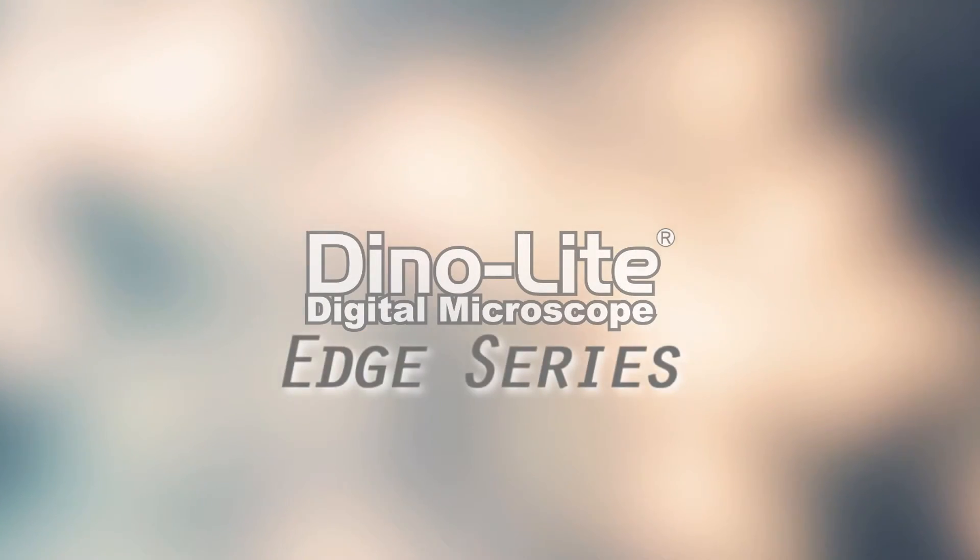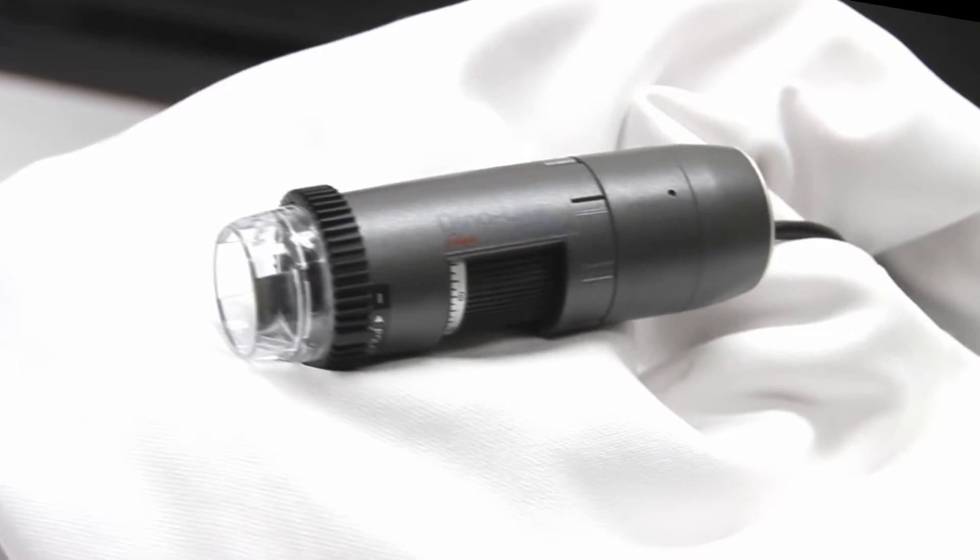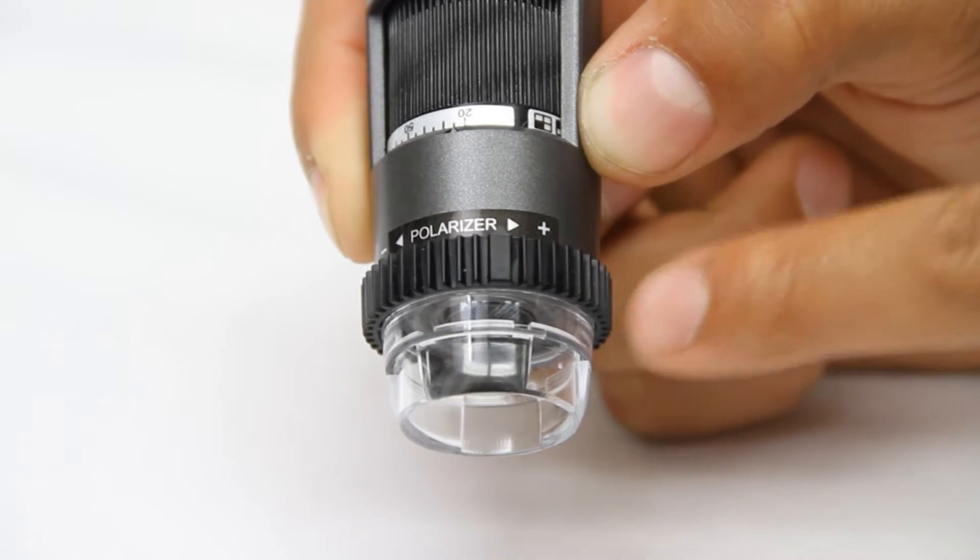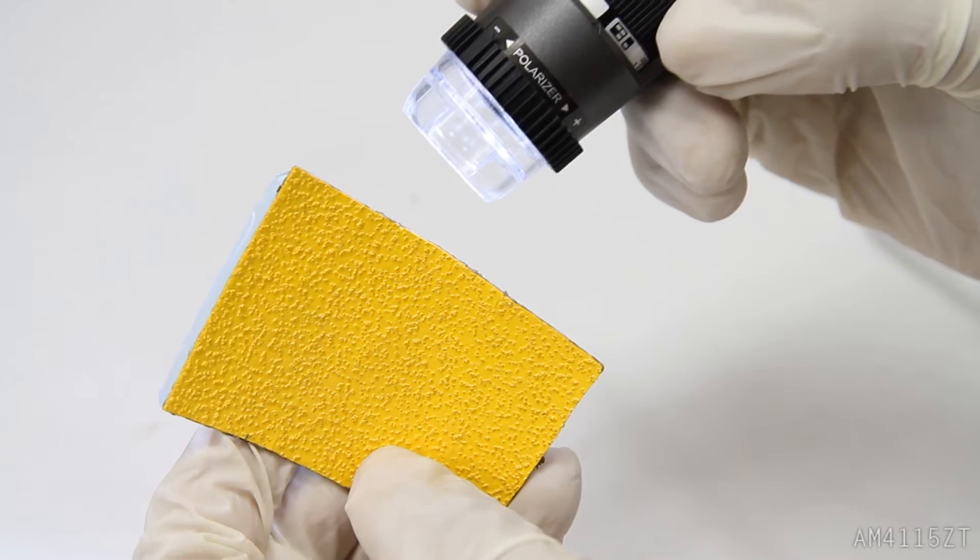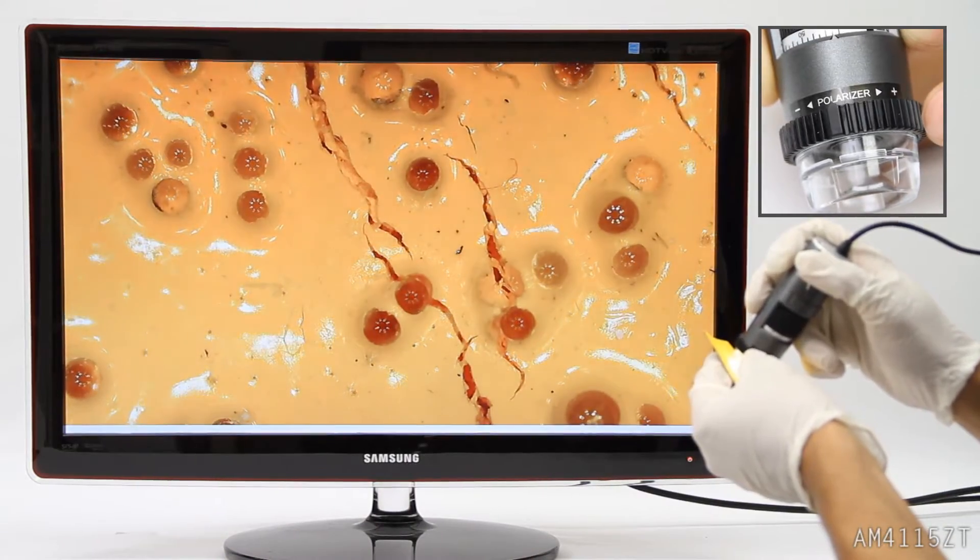Introducing the AM4-115ZT Dynalight Edge handheld digital microscope camera. The AM4-115ZT is the first in the Dynalight Edge series, which features a new image sensor that delivers high image quality with a state-of-the-art lens design.